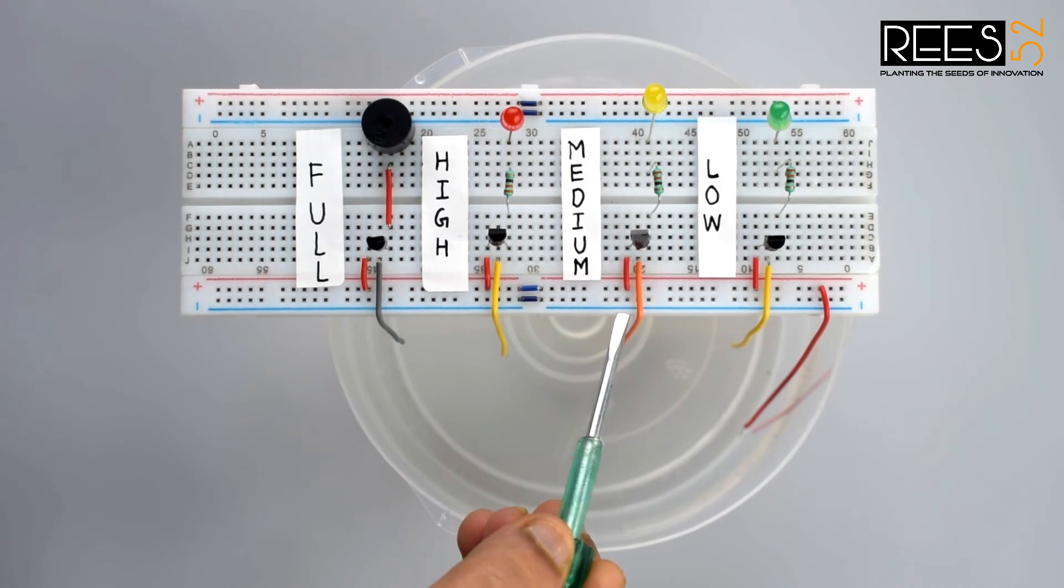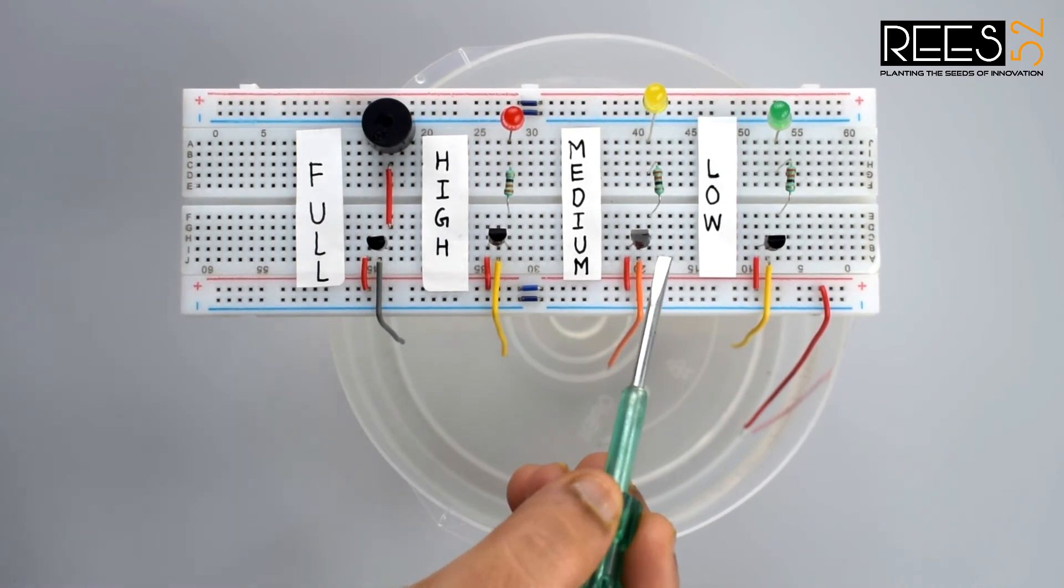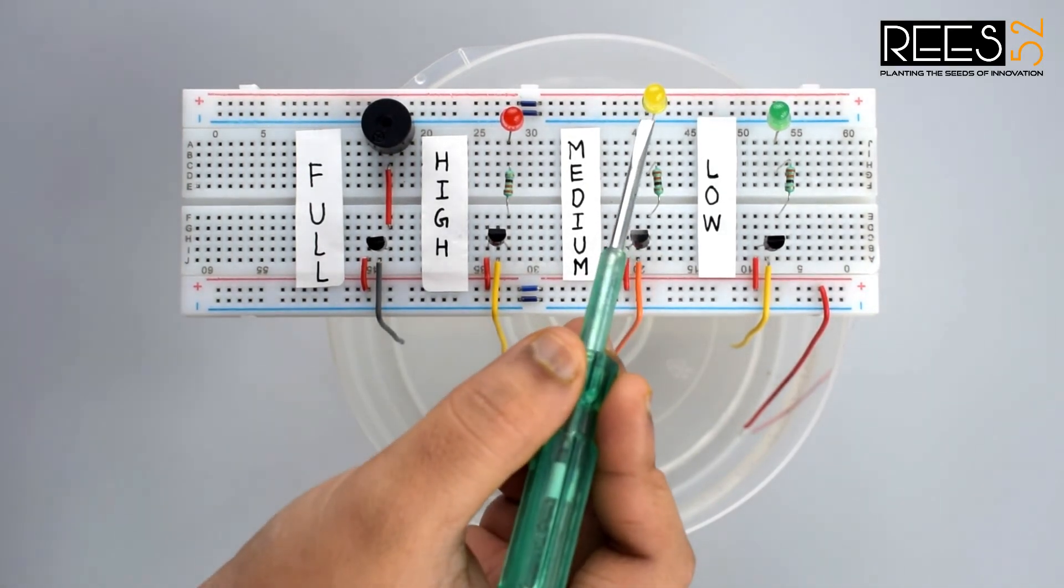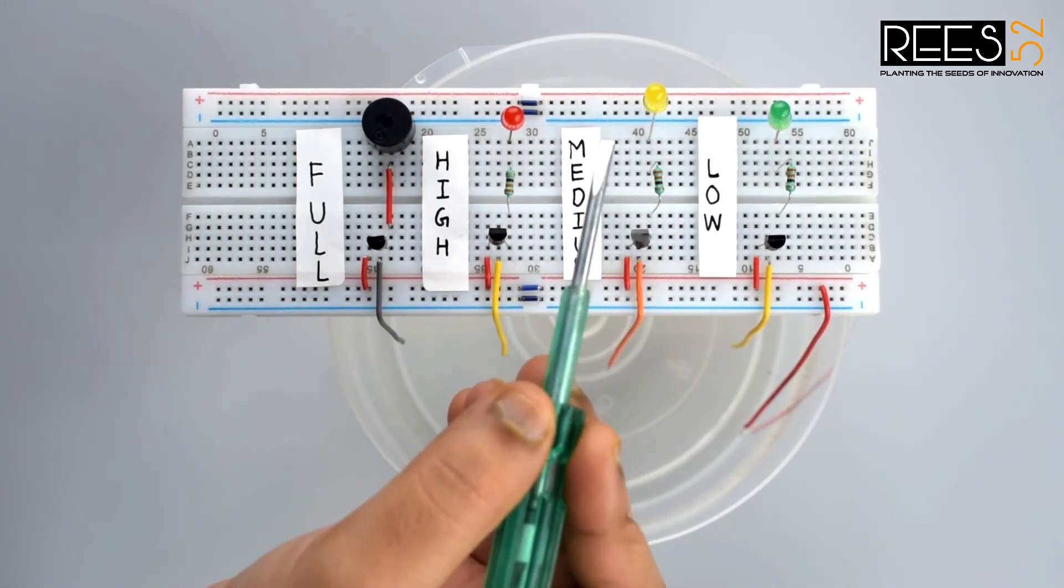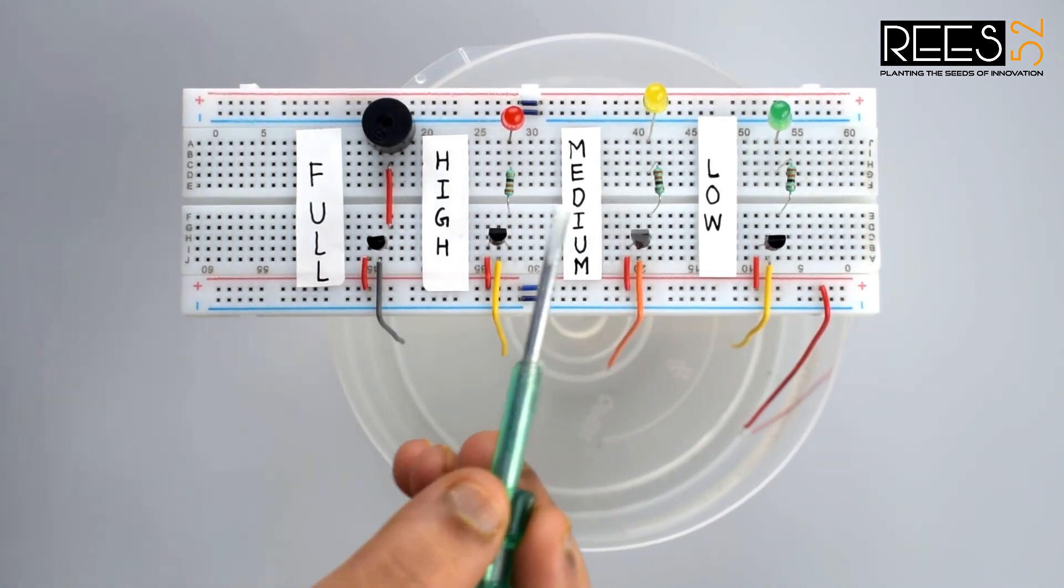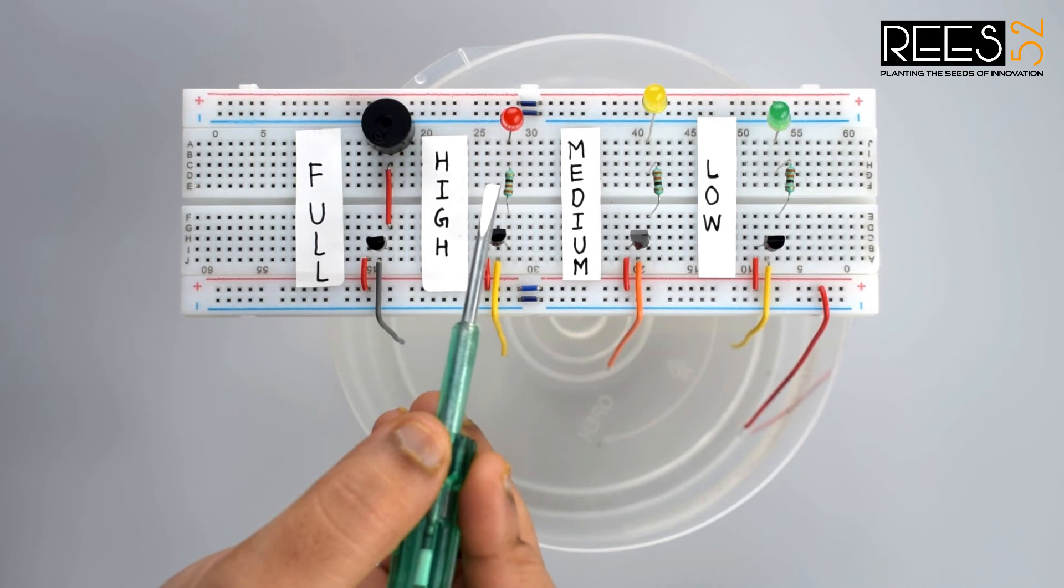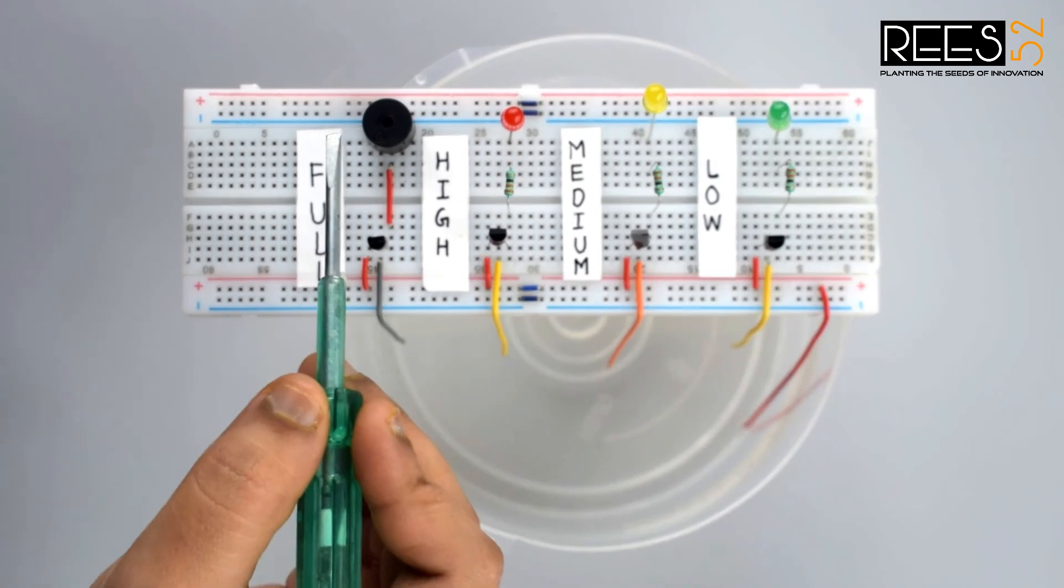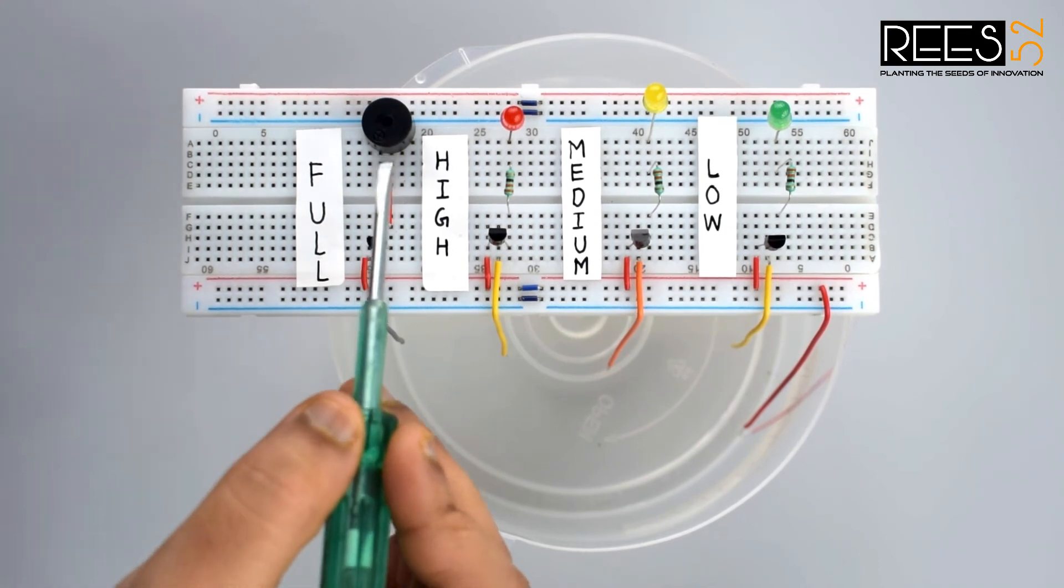As soon as water level reaches to point B, a positive voltage gets applied to the transistor Q2, it gets on and the current started flowing through the yellow LED and LED glows. With same principle red LED glows when water level reaches to point C, and finally buzzer beeps when water level reaches the D level.